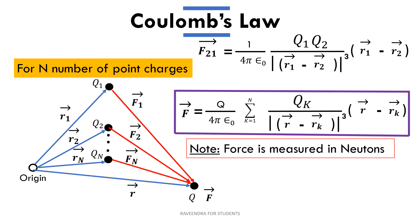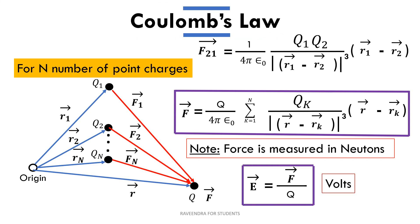Coulomb's Law can also be used to find out the electric field, or electric field intensity, or electric field strength, which is related to force as E bar equals F bar divided by q, measured in Volts per meter, which is also equal to Newtons per Coulomb.